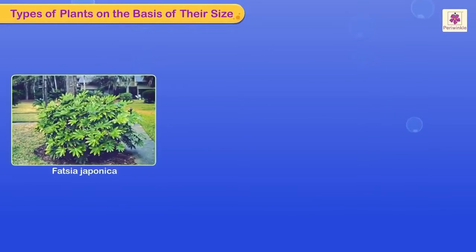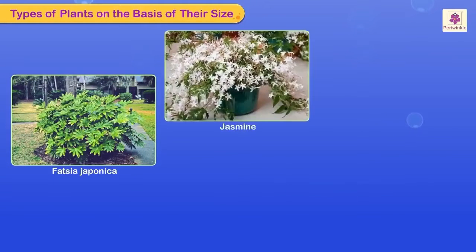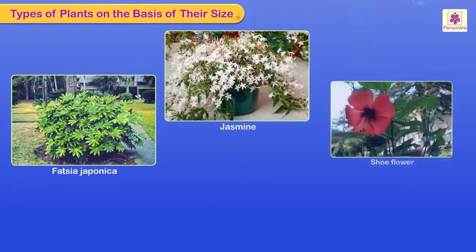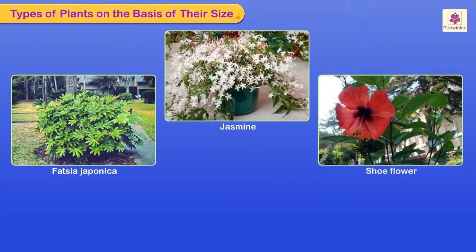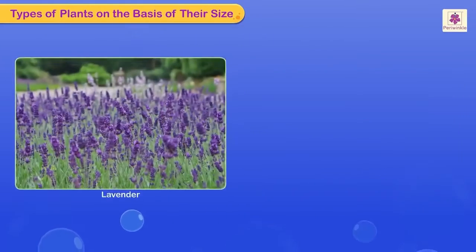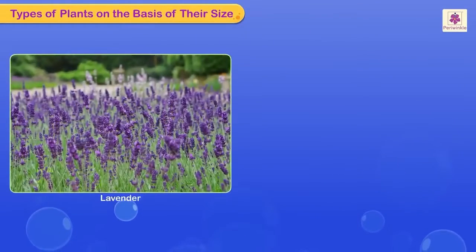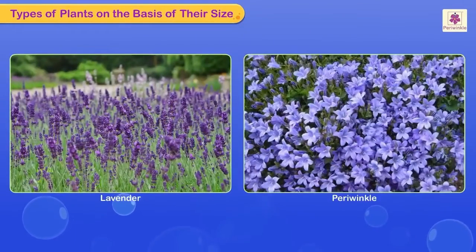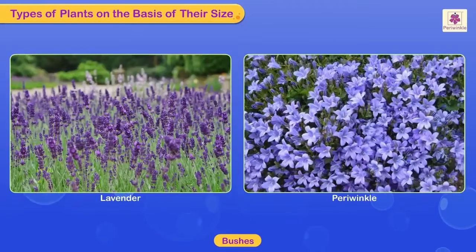Fatsia japonica, jasmine, shoe flower, and pistachio are shrubs. Lavender and Periwinkle are bushes.